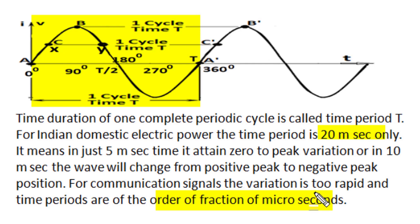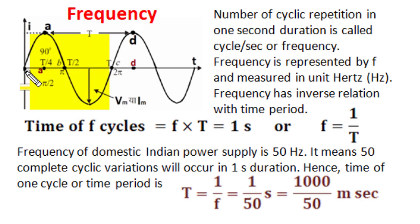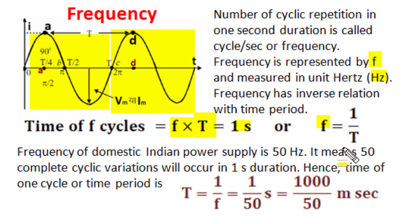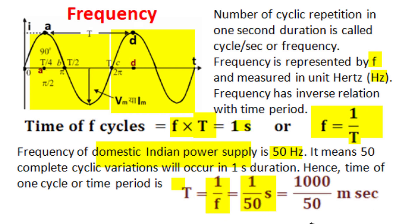One cyclic variation is completed at time equal to one time period, and the number of cycles repeated in one second is called the frequency of the alternating signal. Frequency is measured in cycles per second or hertz, represented by the symbol small f. The time duration of one cycle is time period T, and the number of cycles in one second is frequency f, so f×T = 1 second, clearly indicating that frequency and time period are inverses of each other. For Indian domestic power supply, the frequency is 50 Hz, so the time period is 1/50 second, which equals 20 milliseconds.